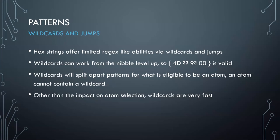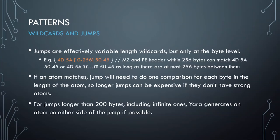With longer patterns containing a wildcard, you might get more than one atom — one on either side of where the wildcards are, if both sides are at least four bytes. The atom selection algorithm will decide that. Jumps are basically variable-length wildcards — you can't do nibbles, you have to do at least a byte — acting as a sliding wildcard.